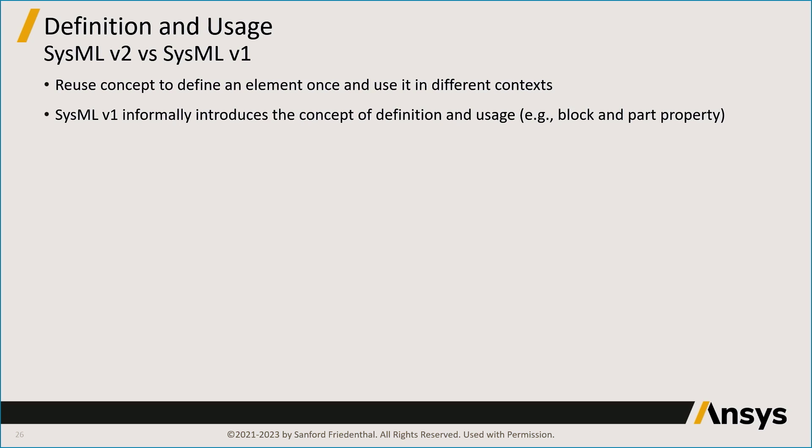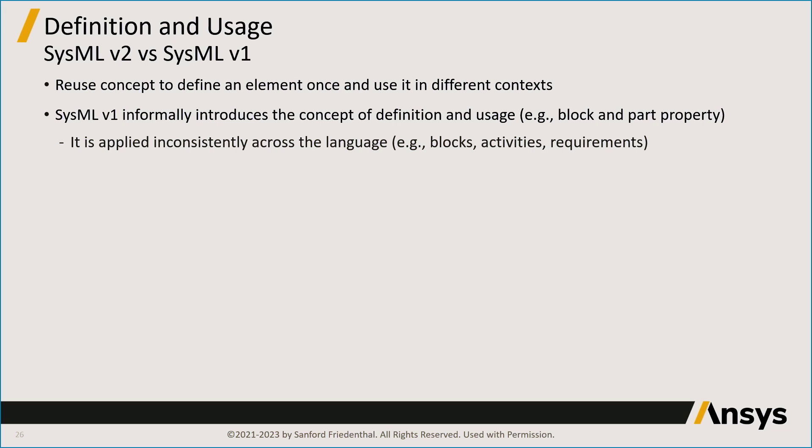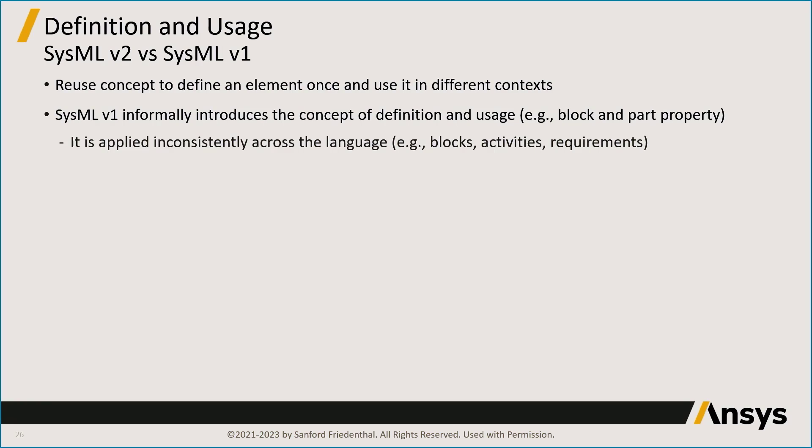In SysMLv1, the concept of definition and usage was informally introduced. For example, a block was viewed as a definition element and a part property was identified as a usage. However, the concept was applied somewhat inconsistently across the language — activities and call behavior actions were kinds of definition and usage elements but the pattern differed from blocks and parts. Requirements didn't have the definition and usage concept applied at all.